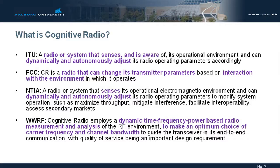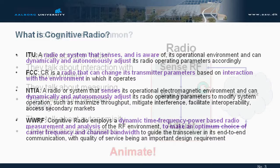What is cognitive radio? A lot of people try to give a definition. These are some that I selected from ITU, FCC, and other regulatory and industrial forums. They describe radio systems that sense, are aware, dynamically and autonomously adjust, can change transmitter parameters, and interact with the environment — and more or less all of them have something in common.